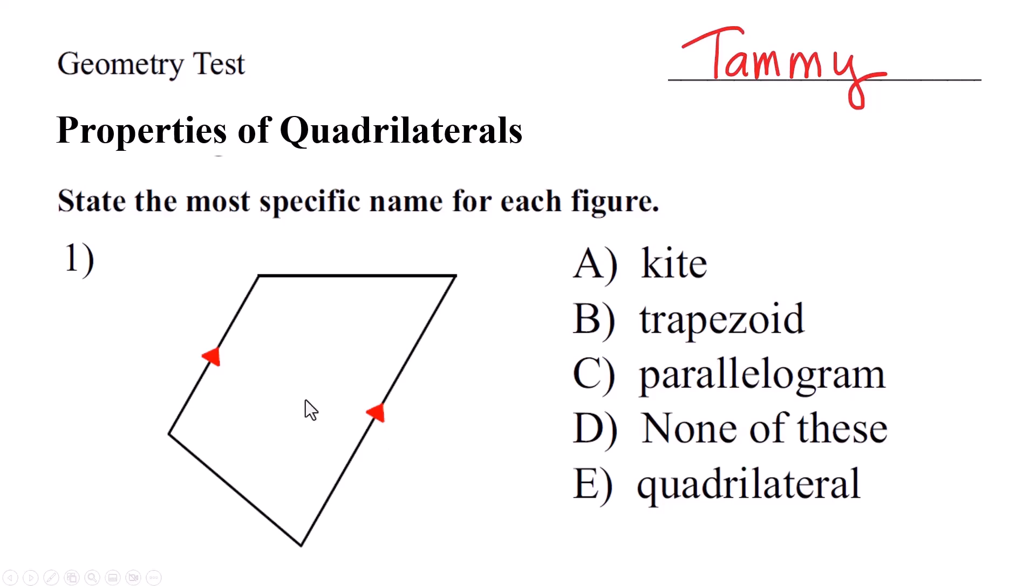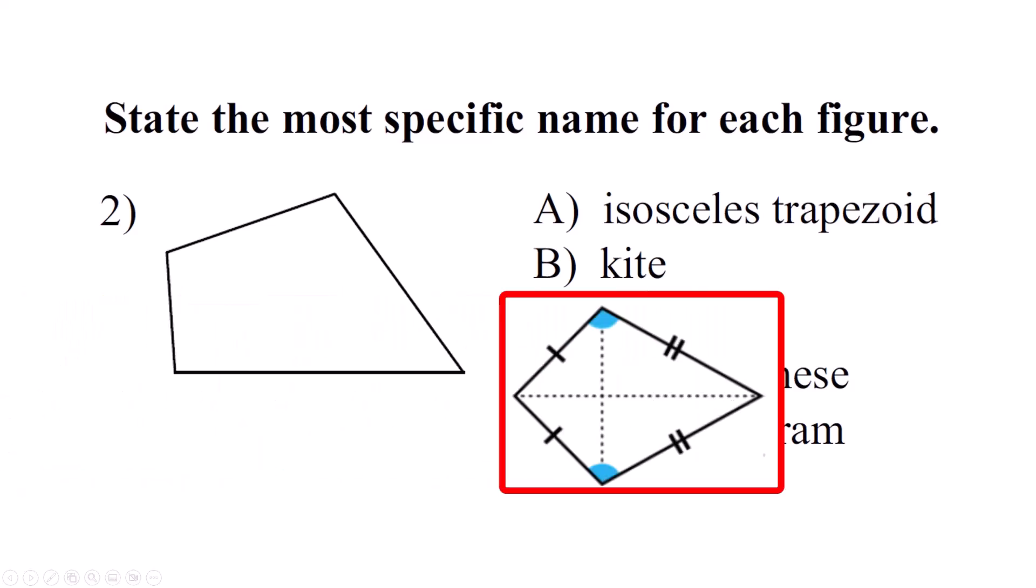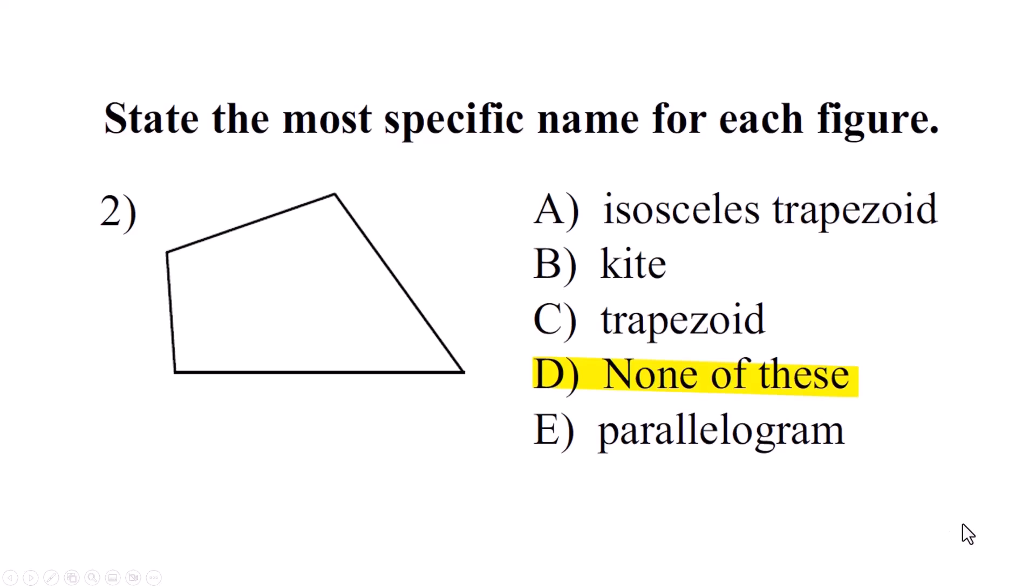Okay so let's go back to this problem. One pair of parallel sides, that is a trapezoid. What is this? None of the sides are parallel. I've got nothing marked as congruent so we have to assume that all the sides are different lengths. I know it's not an isosceles trapezoid. It almost looks like a kite but a kite actually does have some congruent pieces to it. Go back and look at that cheat sheet and you can see that. So I'm gonna go with none of these on this one.